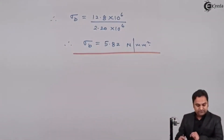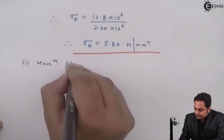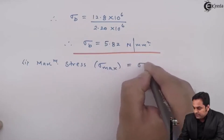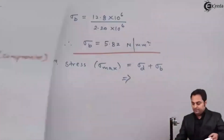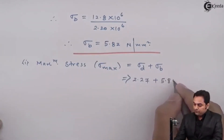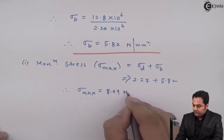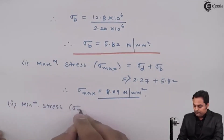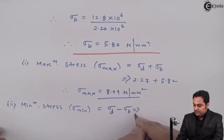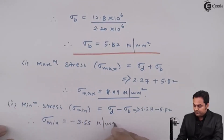After getting the bending stress, since the problem asks for maximum and minimum stresses: sigma max = σD + σB = 2.27 + 5.82 = 8.09 N/mm². Sigma min = σD − σB = 2.27 − 5.82 = −3.55 N/mm².